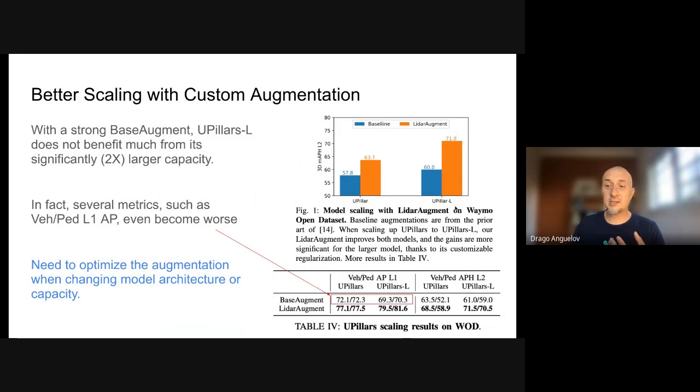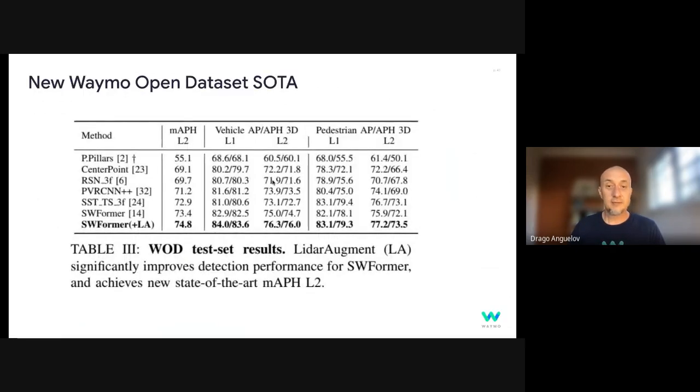Now applying lidar augment custom search for each architecture makes a dramatic difference. And what's particularly interesting is the large model. It pushes the quality or the quality gap is even higher. And so the insight is we actually want to optimize the augmentation strategy when changing model architecture or capacity. This is intuitive. The larger the capacity is probably the more augmentations you want to apply. But this proves that intuition. And one interesting thing that happens is, so you take a fairly simple model, which is PointPillars, and you push it to 71% on the Waymo dataset.